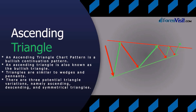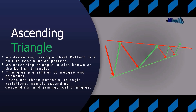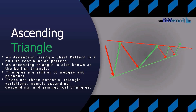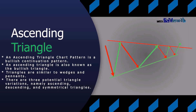Regardless of where they form, ascending triangles are bullish patterns that indicate accumulation. Because of its shape, the pattern can also be referred to as a right-angle triangle. Two or more equal highs form a horizontal line at the top, and two or more rising troughs form an ascending trend line that converges on the horizontal line as it rises.